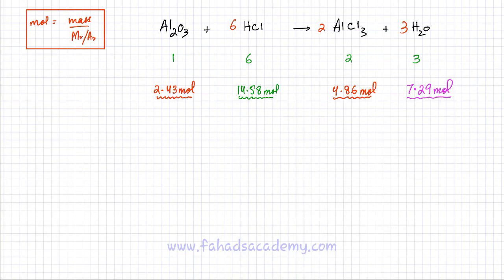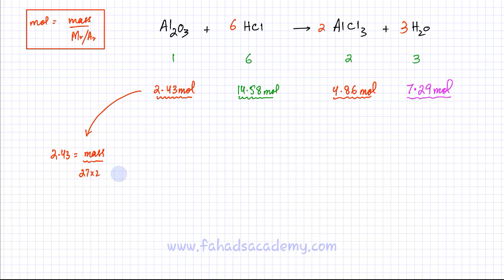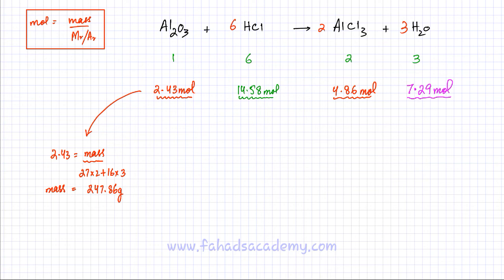Now we've found the moles of all substances: aluminium oxide has 2.43 moles, HCl has 14.58 moles, AlCl₃ has 4.86 moles, and H₂O has 7.29 moles. Now we use moles = mass / MR to find the mass of all substances. Starting with Al₂O₃: 2.43 moles, MR = 27 × 2 + 16 × 3. Calculating gives a mass of 247.86 grams.